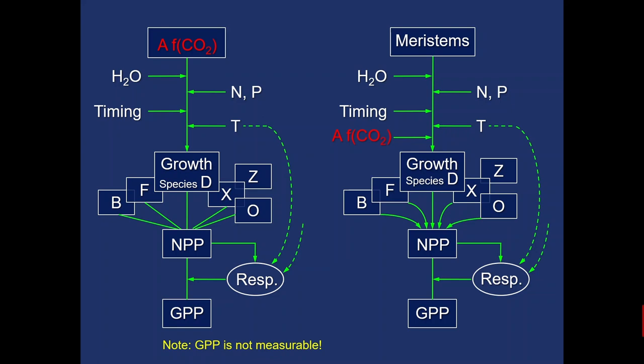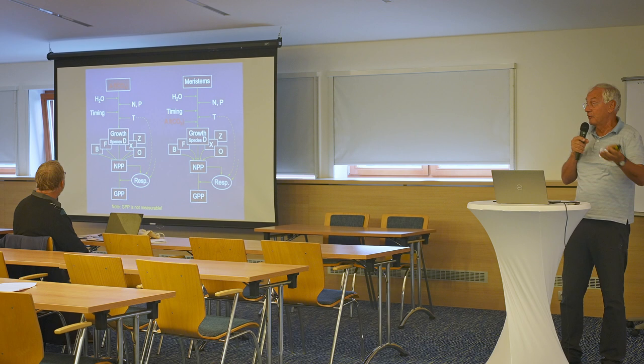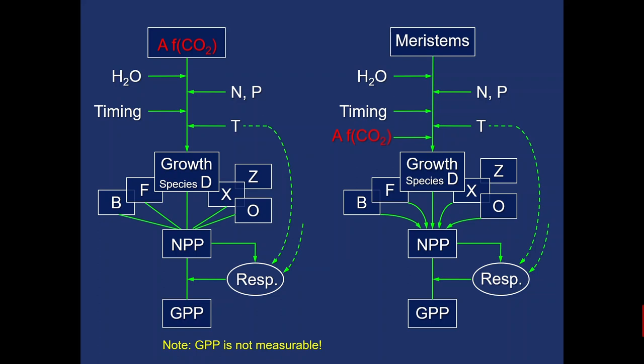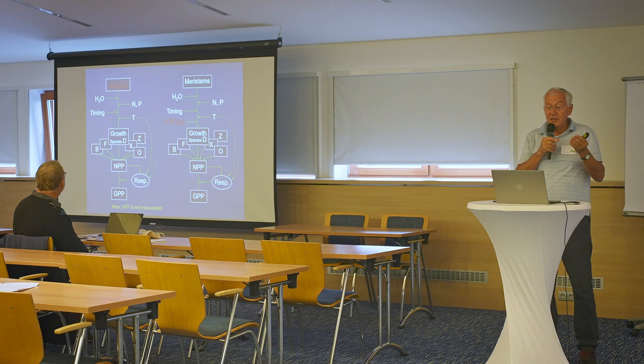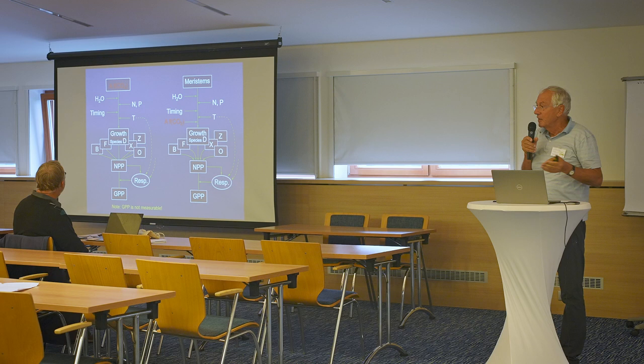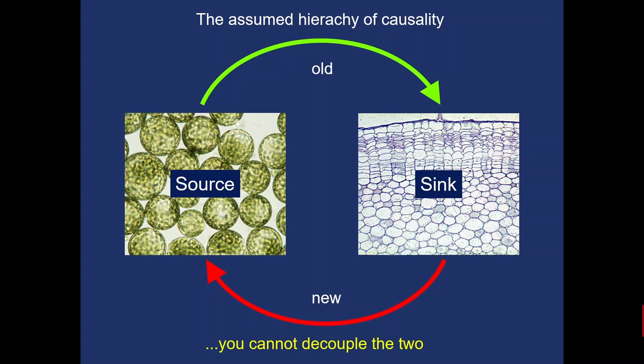Going down from photosynthesis, there comes modulation by water, nutrients, temperature, and so on, ending in growth different for different species, and finally a feedback from respiration. Net primary production is the main driver, and you end up with GPP that nobody can actually measure — whoever claims to have measured GPP is simply wrong. You can only calculate GPP using eddy flux tower or photosynthesis data.